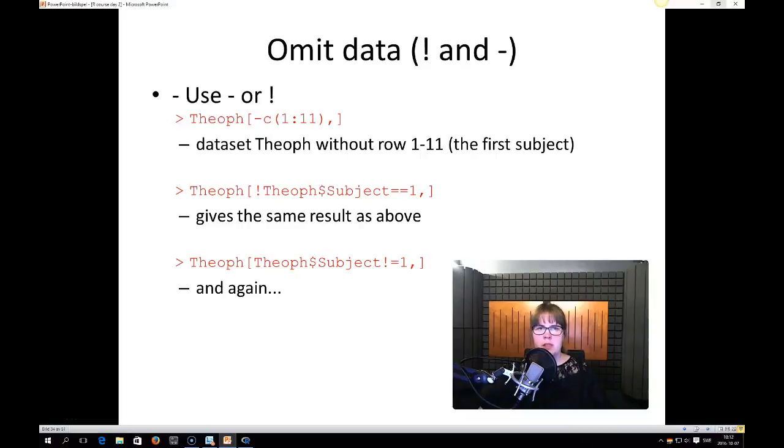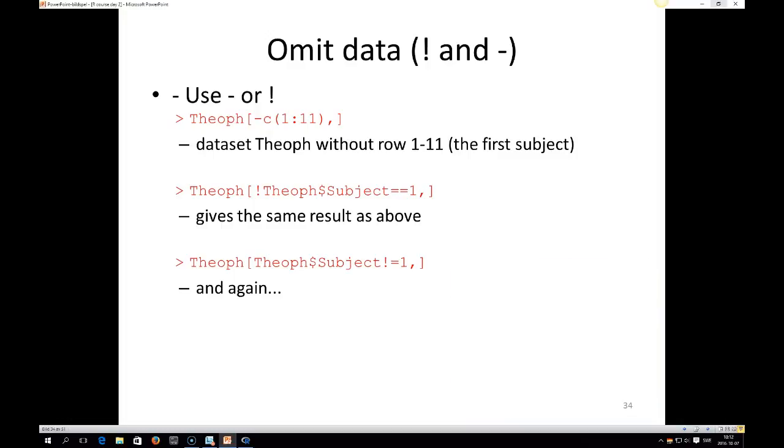If you want to skip some data from a dataset when you're doing your subscripting, you could use the exclamation mark or the minus. So if you write Theoph and then within brackets you start by writing minus